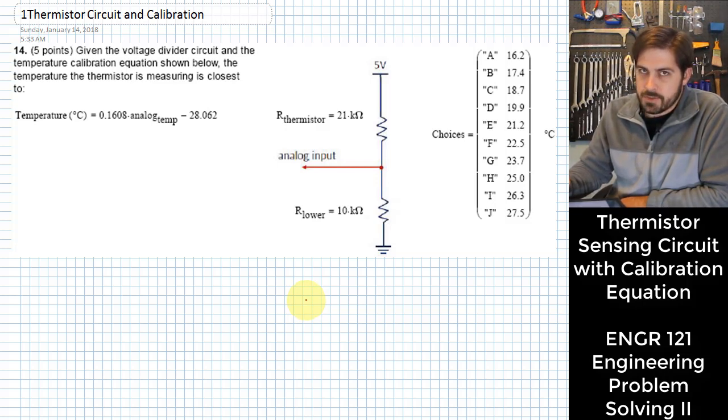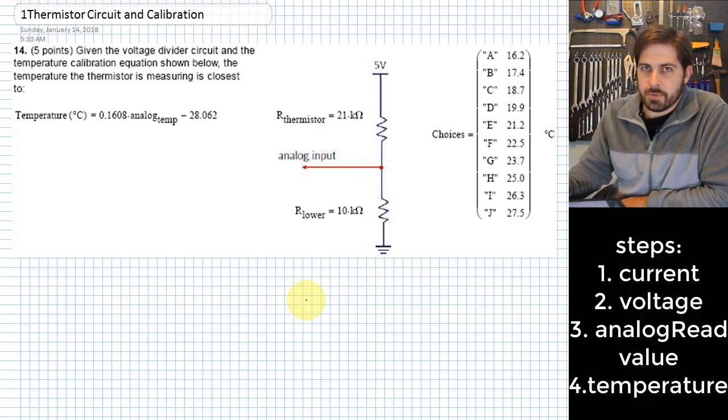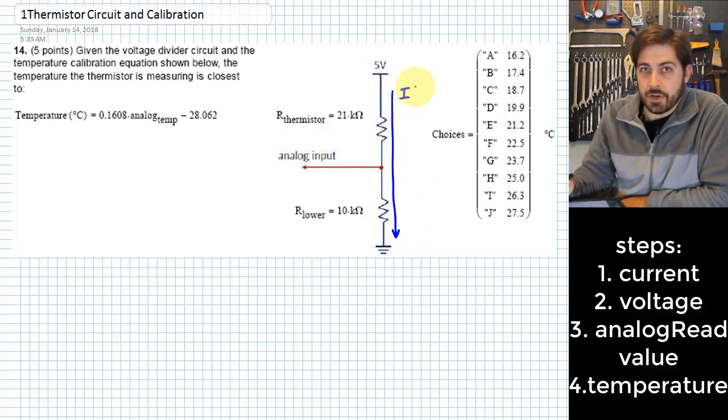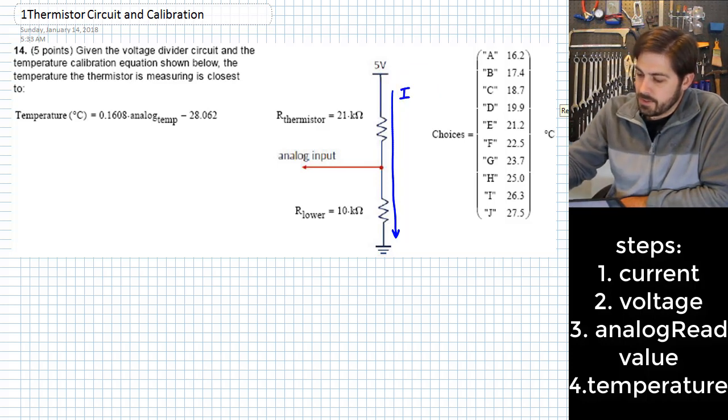The circuit that you see there is a voltage divider circuit. The steps of solving this problem are to first figure out the current that flows through this entire circuit. There's just one place for the current to go. Once we know that current,